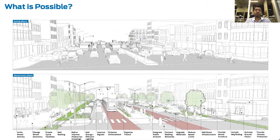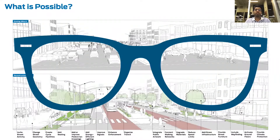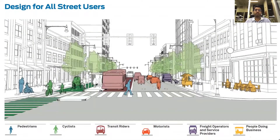We know that most streets around the world have already been built, and it's important that we put on a new set of lenses to see what is possible on these very streets. How can we accommodate all these different road users — our pedestrians, who are not just able-bodied men but also people on wheelchairs and children and families, cyclists of all ages and abilities, our transit riders formal and informal, our two- and four-wheeler motorists, our freight operators and service providers, and often the users who get left out — the people doing business on our streets.